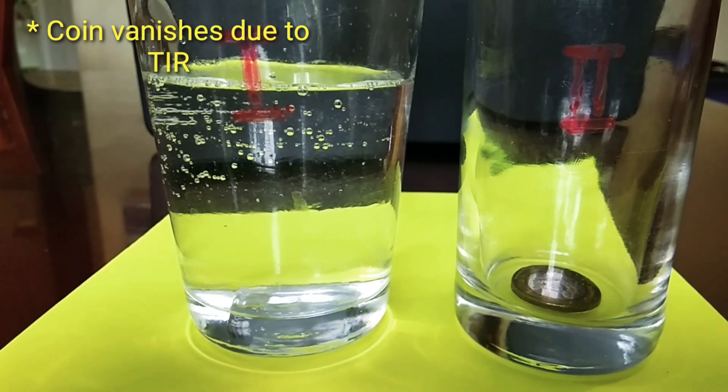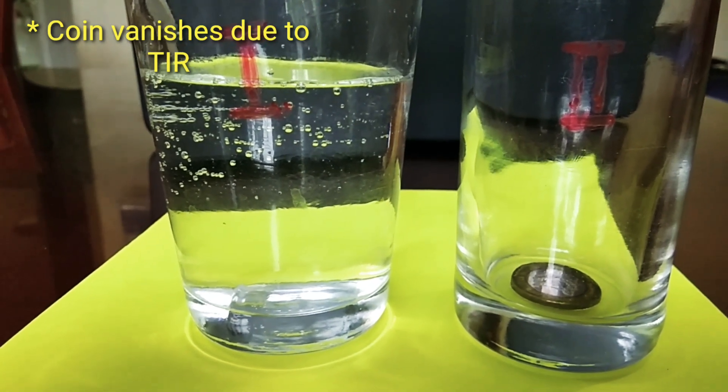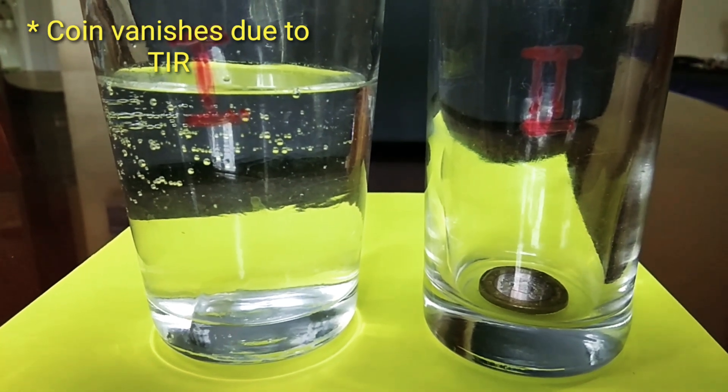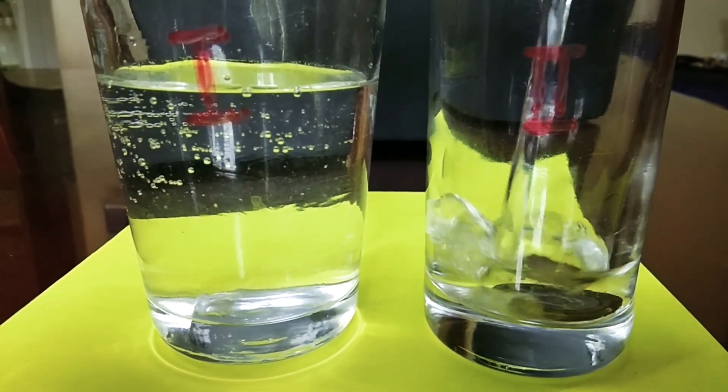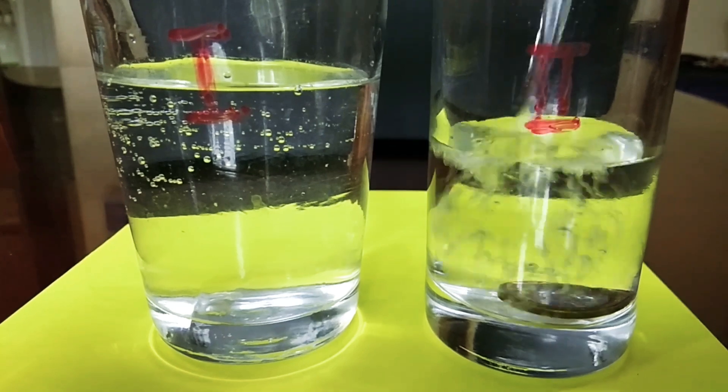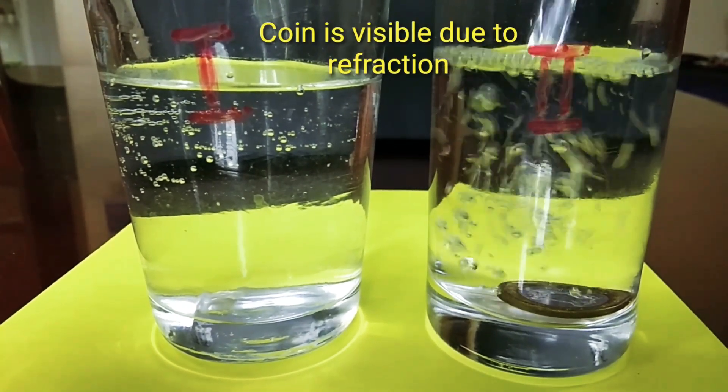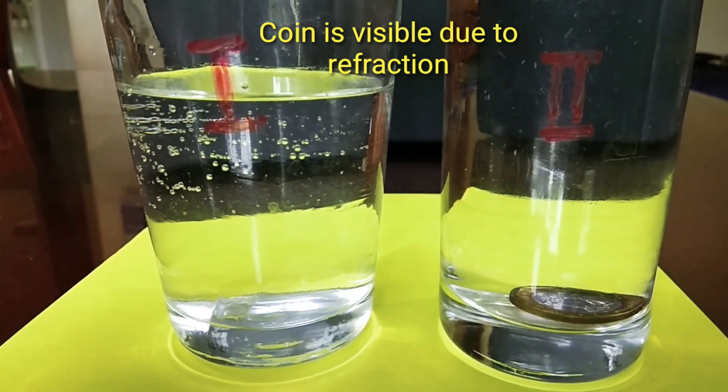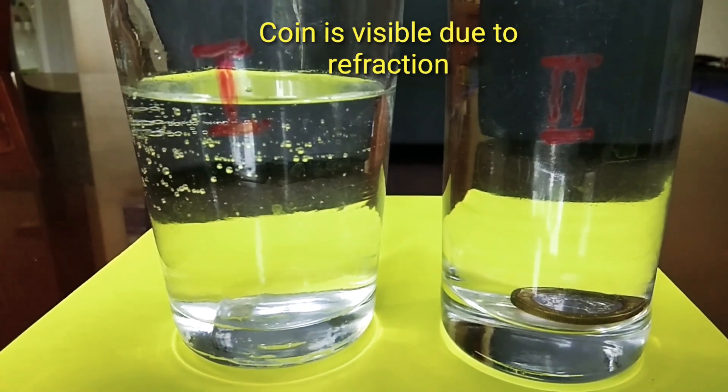Now let's check out what happens when water is poured into glass number two. We are pouring water into glass number two. The coin is still visible. It remains visible. You can see the coin. It's because of refraction of light.